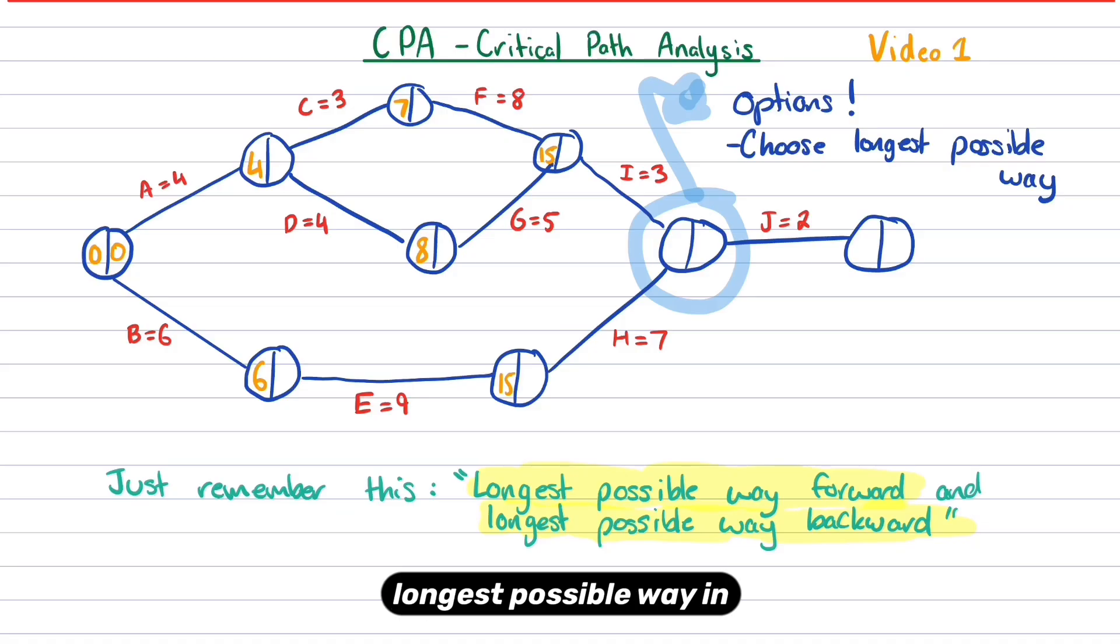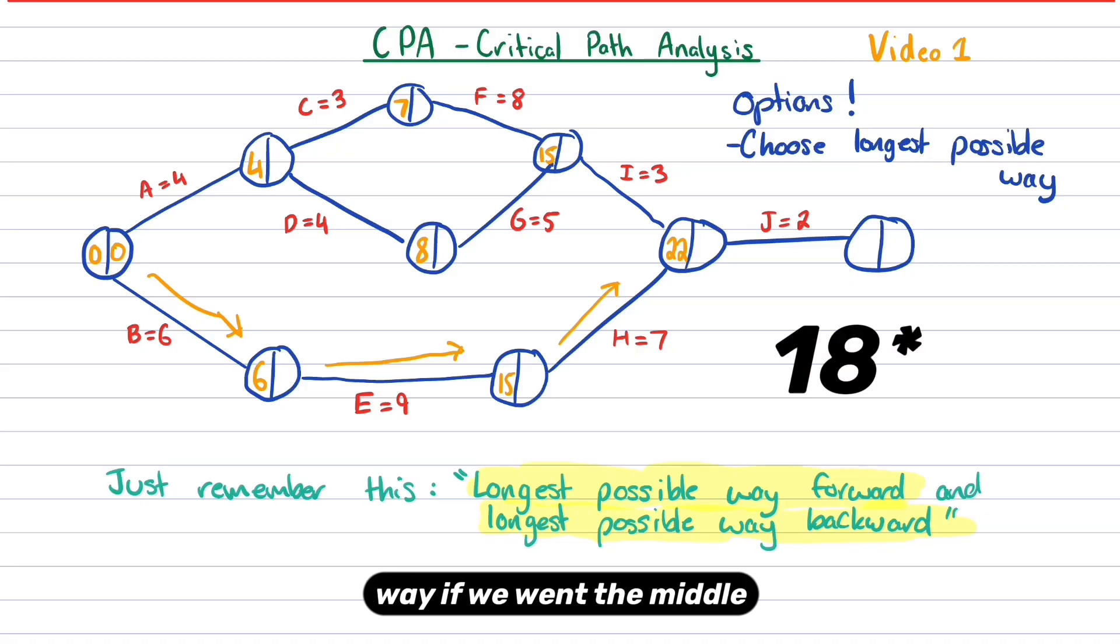So the longest possible way in this case would be six, nine, and seven, because six plus nine plus seven is going to be 20, is going to be 22. So if we had have gone A, C, F, and I, that's going to be four plus three plus eight plus three, which is going to be seven plus 11, which is 19. So that's not the longest possible way.